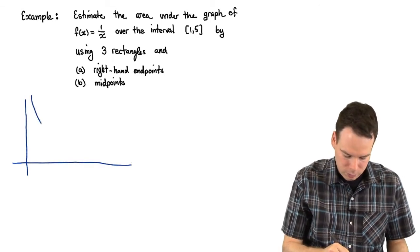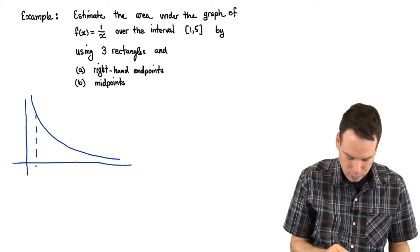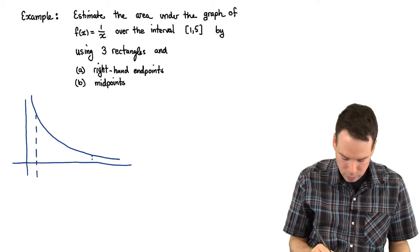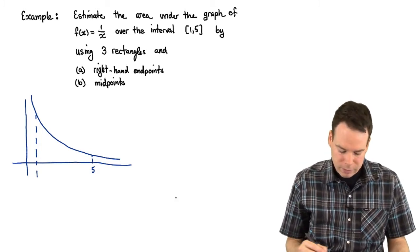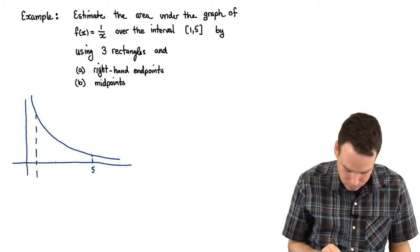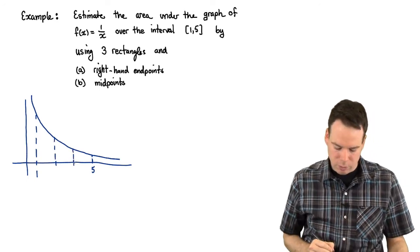So here's our function, f(x) equals 1 over x. We're interested on the interval from 1 to 5, and we're going to use three rectangles or three subintervals. So we'll split it up and there's our three subintervals.